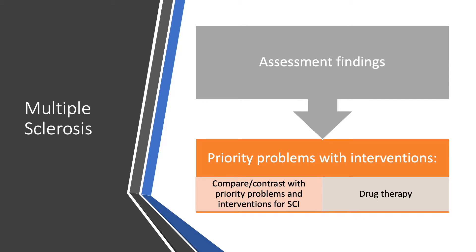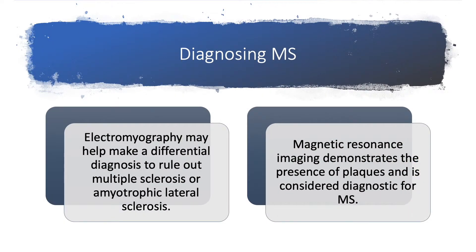Progression of weakness that characterizes multiple sclerosis can be confused with other problems of the spinal cord, so assessment findings are imperative. You must identify priority problems and determine interventions. Compare and contrast with priority problems and interventions already learned for spinal cord injury, and add drug therapy designed to reduce the incidence of demyelination of the nervous system.